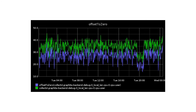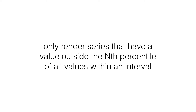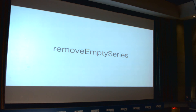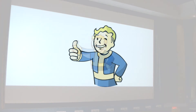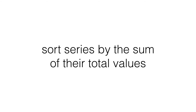Offset to zero. Power — statistical math stuff. Remove between percentile — only render series that have a value outside the nth percentile of all values within an interval. Remove empty series — if the entire series is null, don't pull it in, don't show it. Sort by total basically adds up all the values per series and sorts them by that amount.